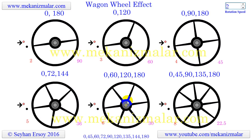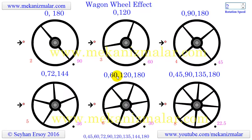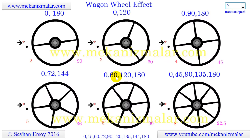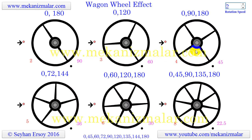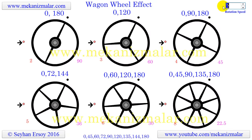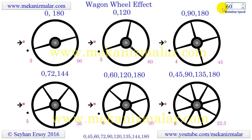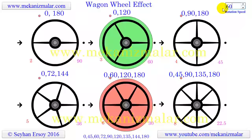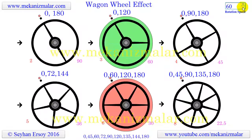We get the number 60 by dividing 360 by the number of spokes. For a 6-spoked wheel, for every frame refresh the given spoke will move to the location of the next spoke's position if the angle increment is 60 degrees.